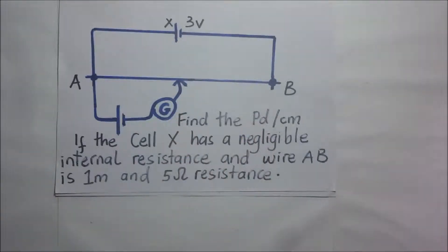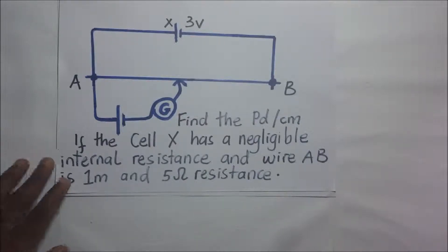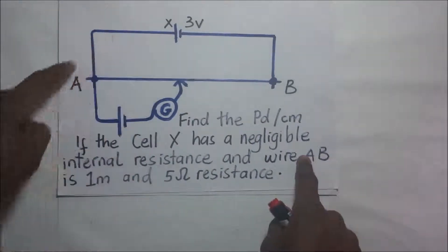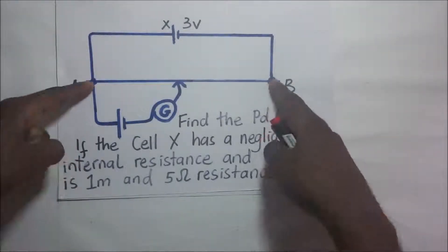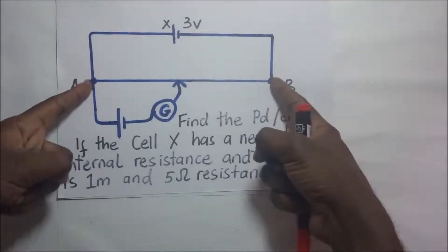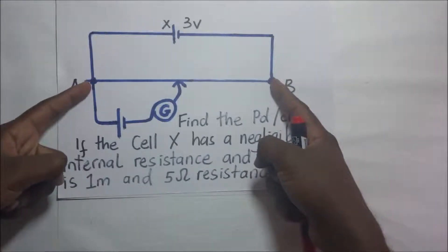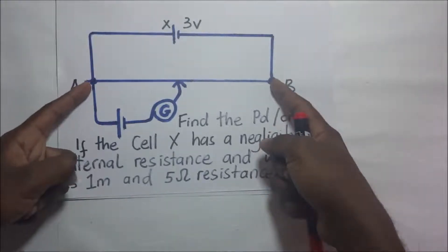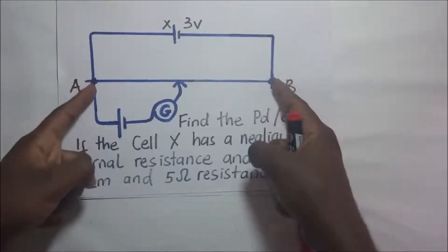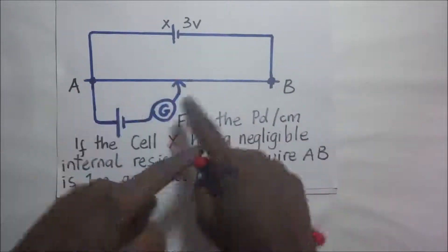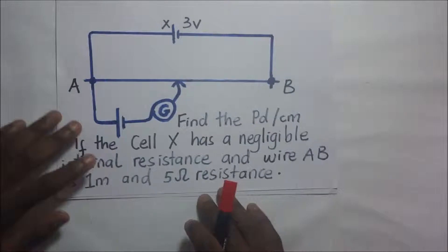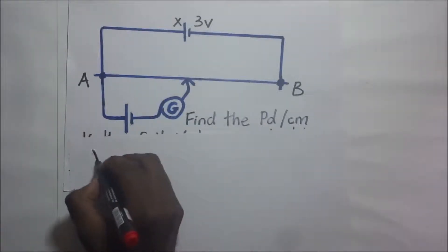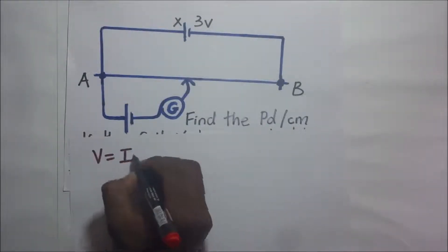There are two ways we can find the PD per centimeter. The first way is to find the potential difference across the slide wire AB. After getting this potential difference across wire AB, we divide it by the length of the wire to get the PD per centimeter. Let's begin with that approach. We know that from Ohm's law, V is equal to I times R.